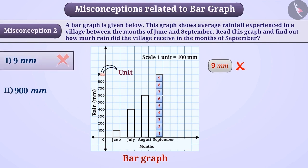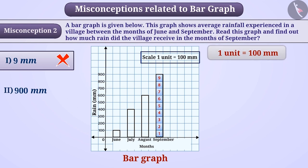Hence, option 1 is the incorrect answer. The correct understanding is that it is important to pay attention to what scale is chosen when receiving information from the bar graph. For instance, here, 1 unit is equal to 100 mm.